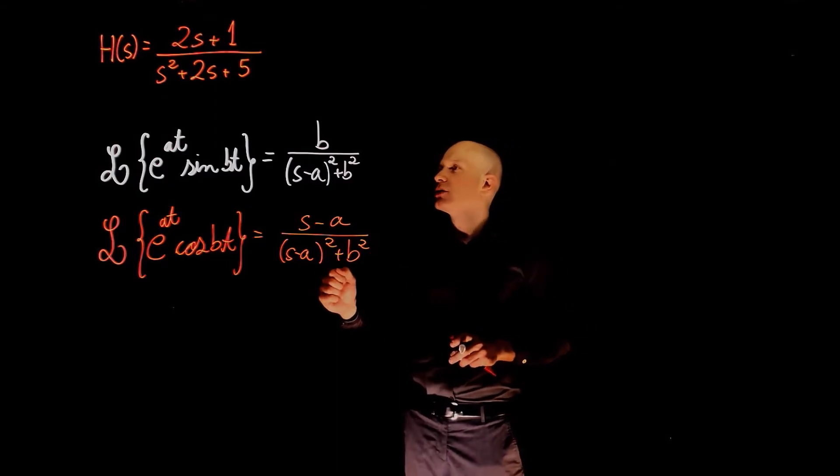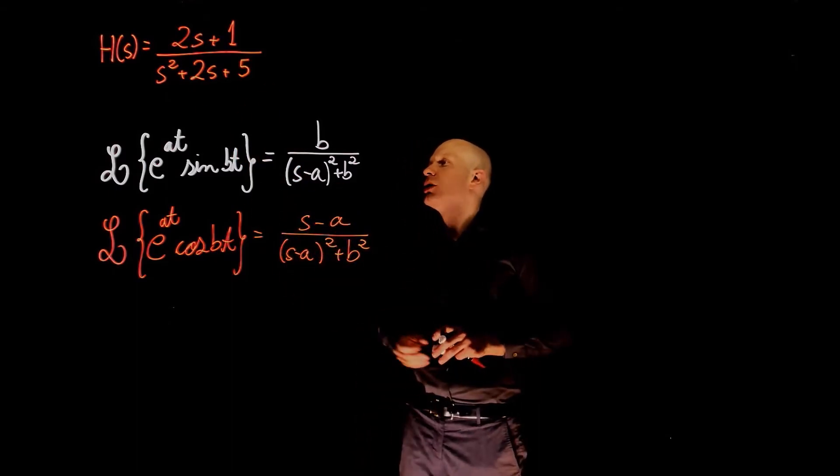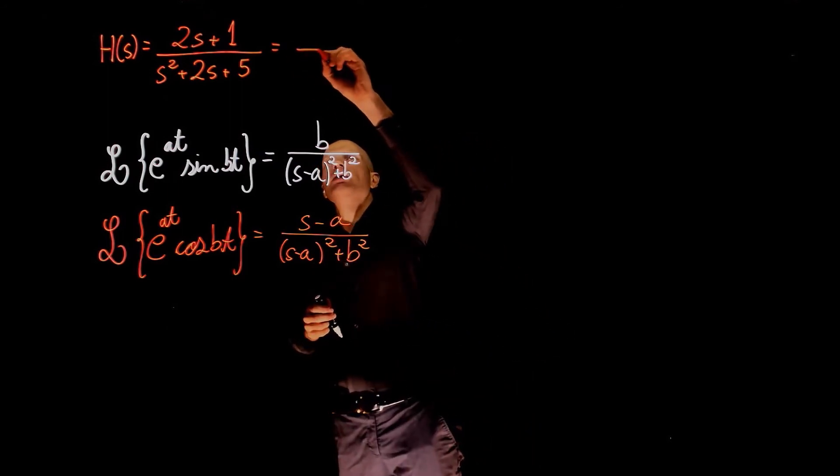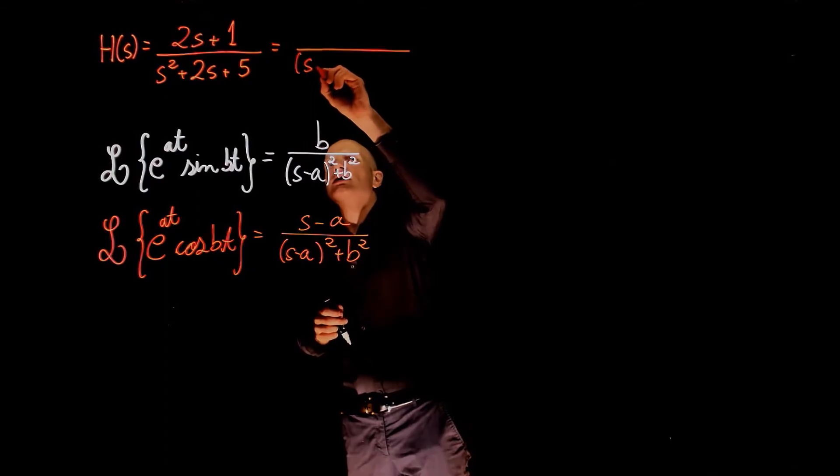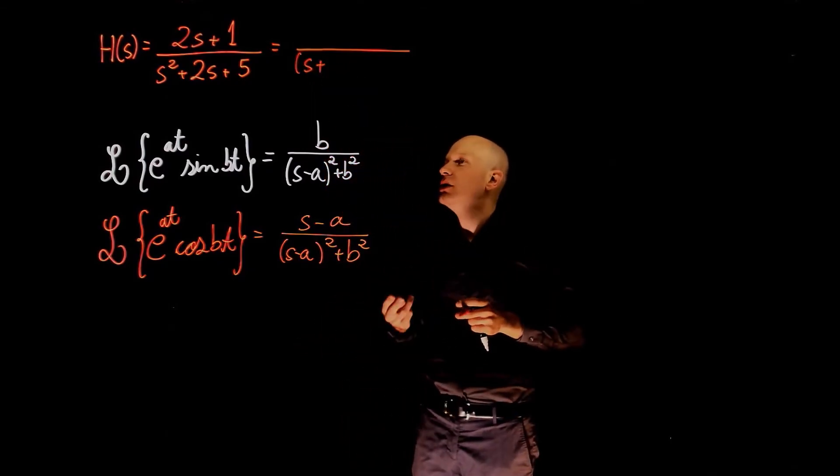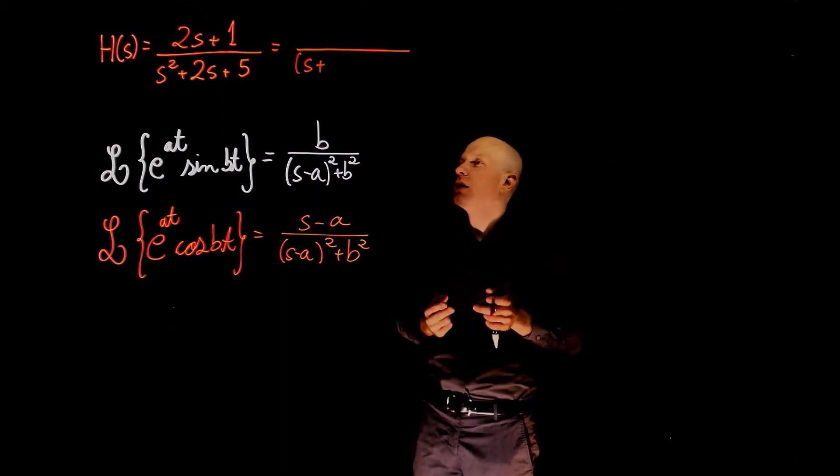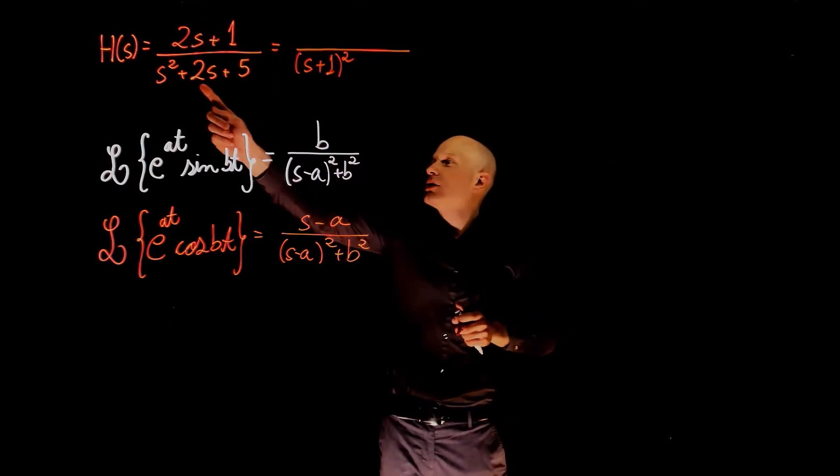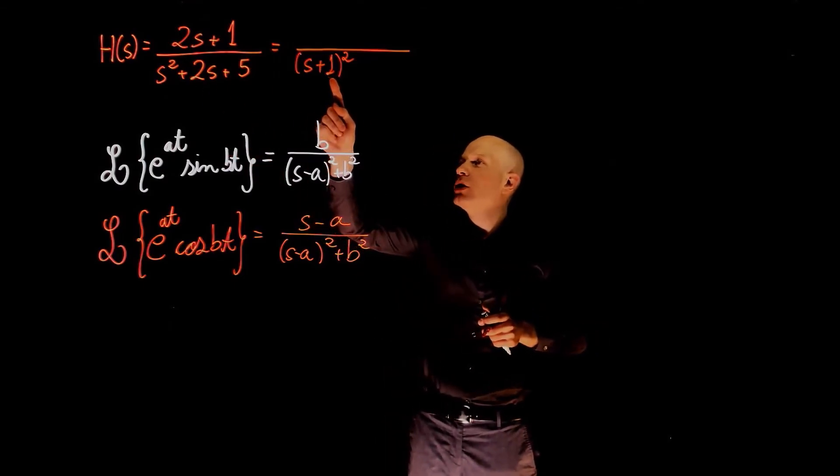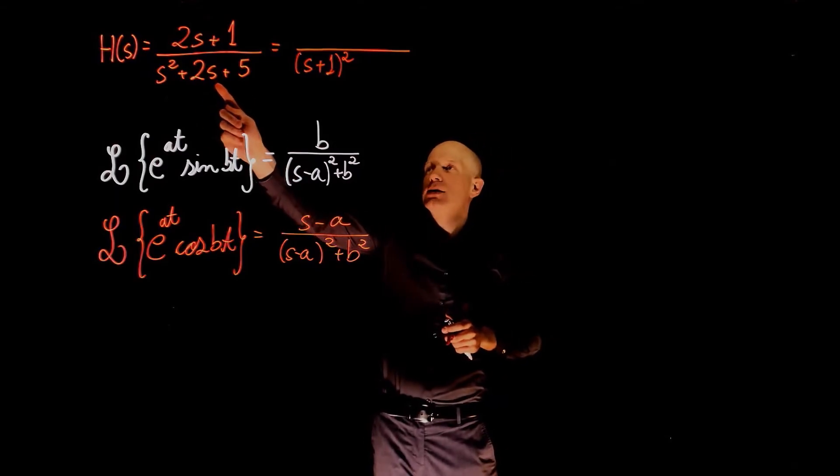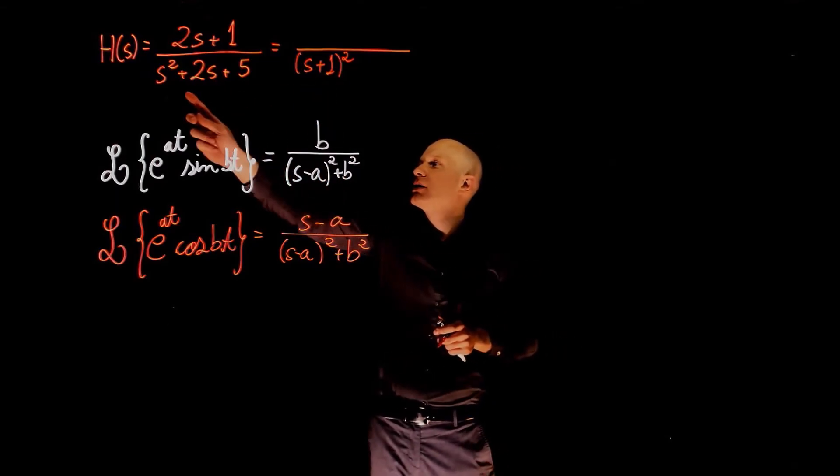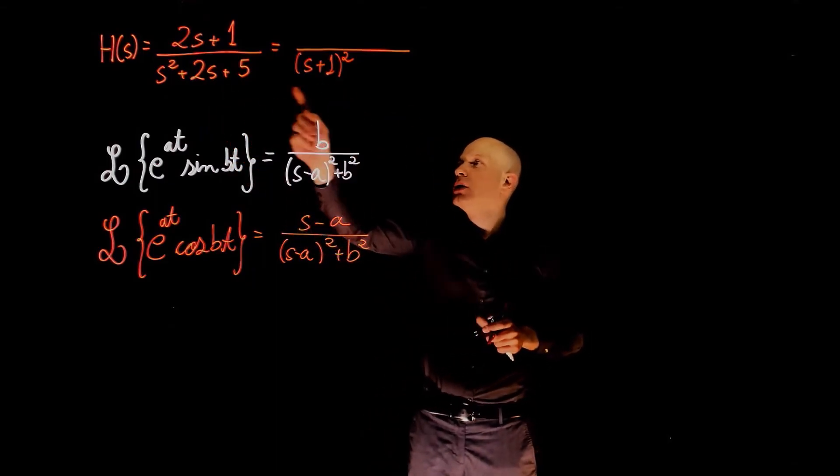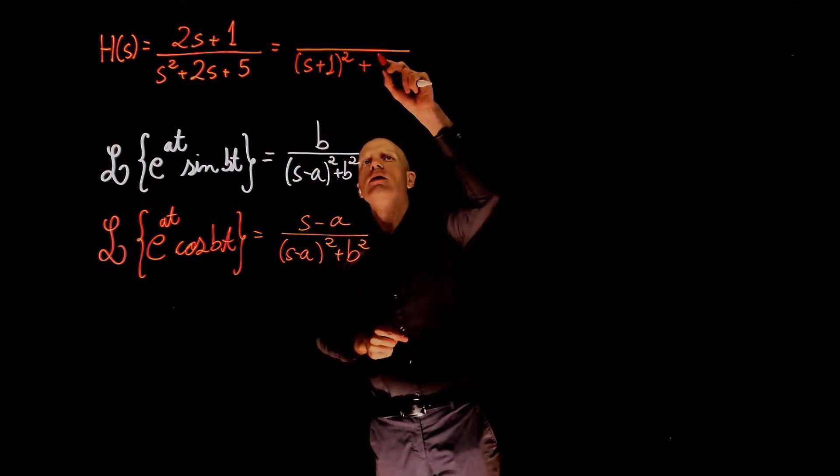In order to get s minus a, we need to rearrange this equation with s plus something squared. For the denominator, this can be written as s plus a constant squared. That constant needs to be, in this case, 1. And the reason is, if we expand this, we can only get 2s when we have 1 here. Any other value will not give us this 2s. So this is the only way we can get s squared plus 2s. This results in s squared plus 2s plus 1. So to get back to 5, we need to add 4.